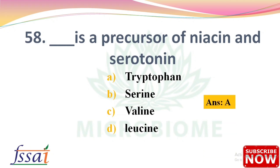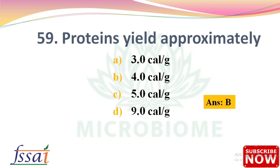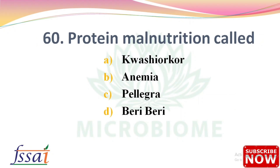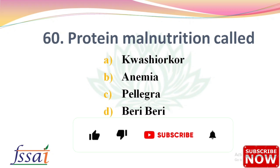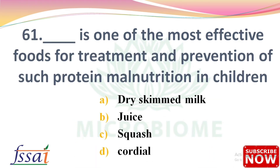Next question: Protein yields approximately dash calories per gram — options: 3, 4, 5, 9. The right answer is option B, four calories per gram. Next: Protein malnutrition is called — options: kwashiorkor, anemia, pellagra, beriberi. The right answer is option A, kwashiorkor.